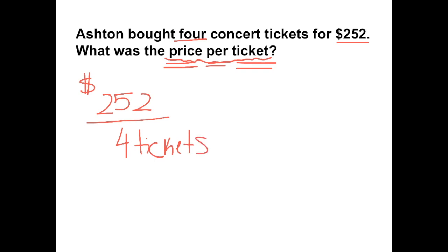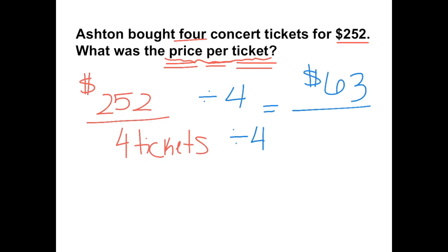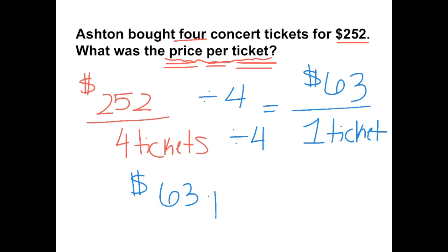To find how much he spent per ticket, we're trying to find how much he spent for one ticket. I have to divide the numerator and denominator by the number of tickets, or by the denominator. $252 divided by four gives us $63. Four tickets divided by four gives us one ticket. So he spent $63 per ticket — and this is the unit price.